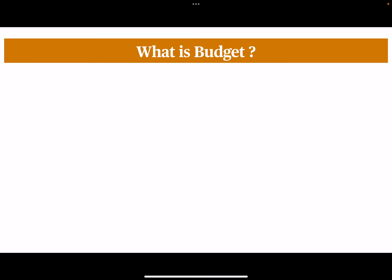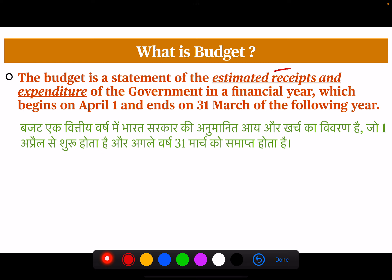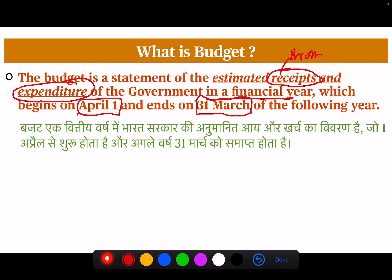First, we need to know what is going to happen. Budget is a statement of the estimated receipts, which we also call income, and expenditure of the government in a financial year, which begins on April 1 and ends on the 31st of March of the following year. If we talk about 2024-2025, then it will start on April 1st of 2024 and end on the 31st of March 2025.